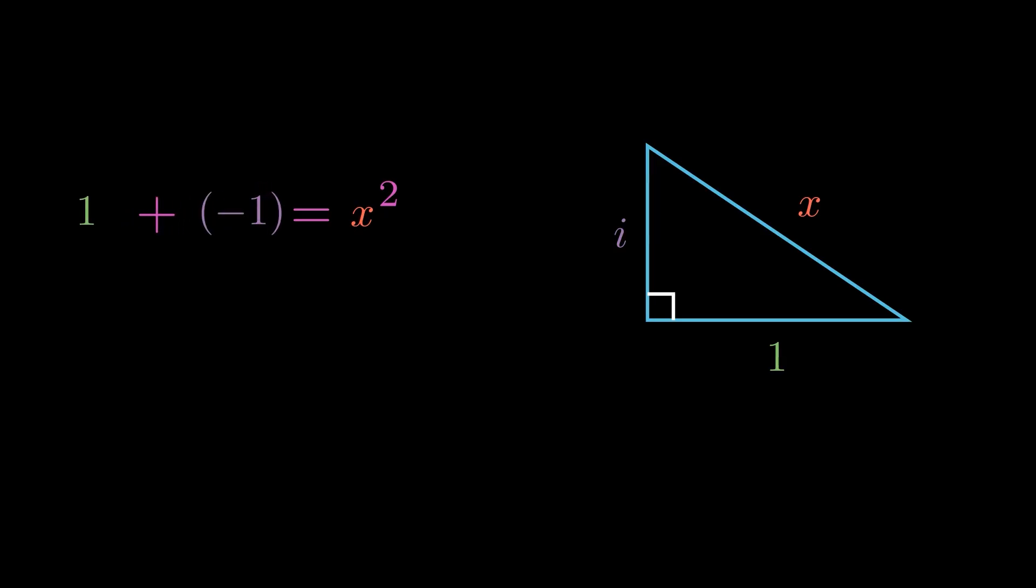Wait. This would mean that we have 1 minus 1. So, x squared equals 0? That would mean x is also equal to 0? Obviously, this cannot be right.